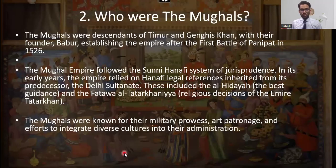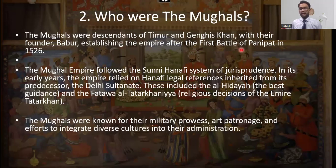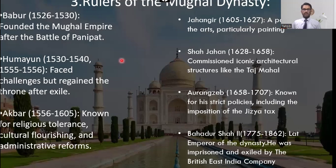The Mughals were descendants of Timur and Genghis Khan. Their founder was Babur, who established the empire through the First Battle of Panipat in 1526. They followed the Sunni Hanafi system of jurisprudence and were known for their military prowess, art patronage, and efforts to integrate cultures into their administration.